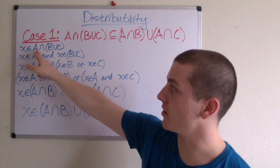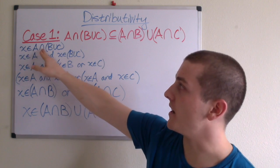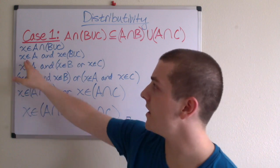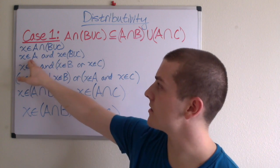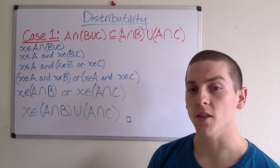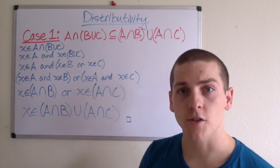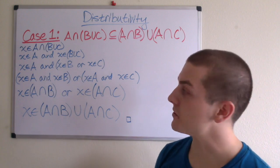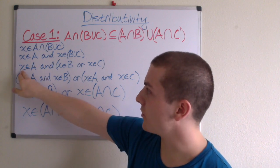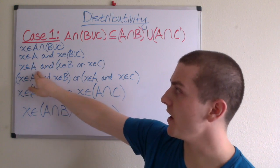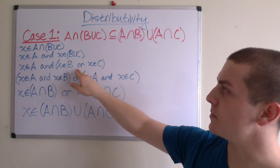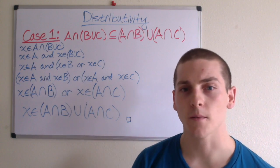Suppose that X is an element of A intersection (B union C). Then X is an element of A and X is an element of B union C, by definition of the intersection. So we still know that X is an element of A, and by definition we know that X is an element of B or X is an element of C.